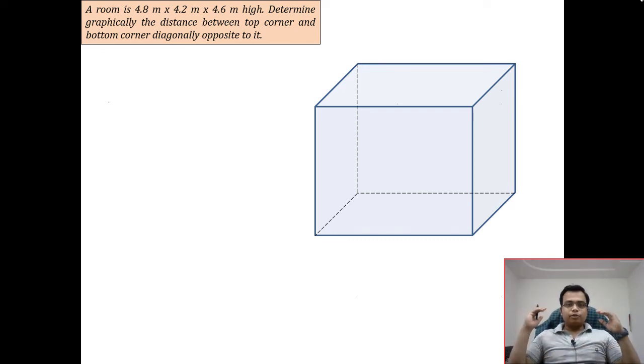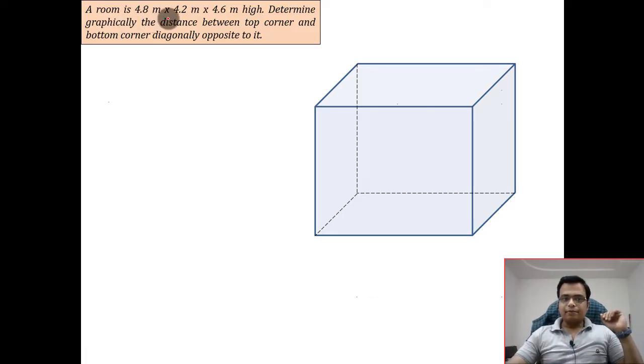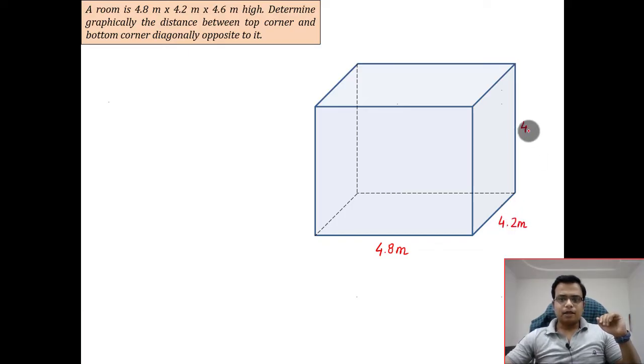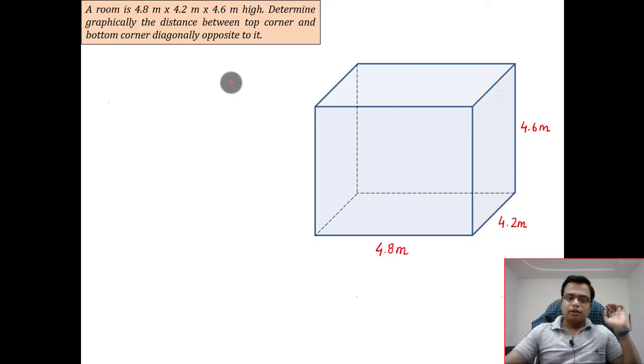Hi everyone, this is Manas, your friend and tutor. Let's kick off with this problem on level three. We've got a room 4.8 by 4.2 by 4.6. Let me just mark all the dimensions. This is 4.8 meters, this is 4.2 meters, and the height is 4.6 meters.